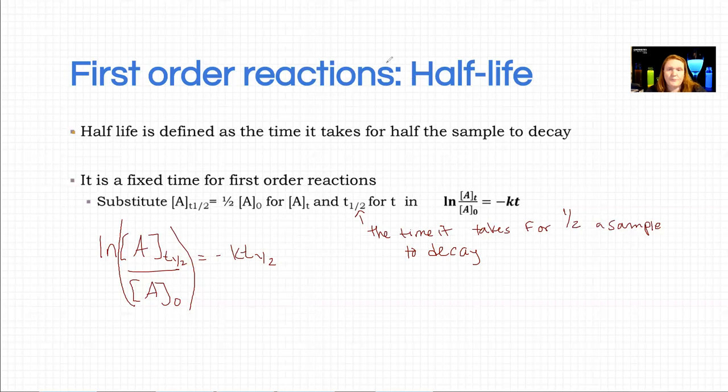So here we go. Here's our substitution. If this is true, what we end up with is half of the initial concentration divided by the initial concentration. Right, so I substituted A sub t-half for the fact that that means half of my initial material is gone.